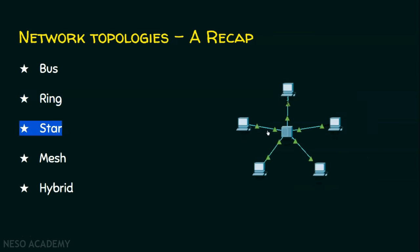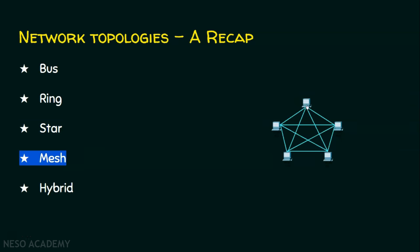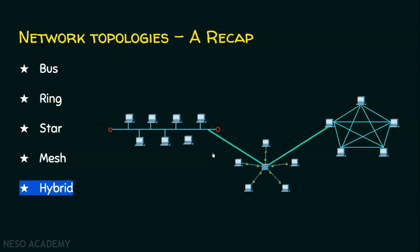Coming to the star topology, we will have a central node — maybe a switch or a hub — and each device will be connected to the central node. Coming to the mesh topology, every pair of nodes will have a dedicated line; every node will be connected with its other nodes through a dedicated link. And coming to the hybrid topology, a hybrid topology is a combination of one or more topologies — for example, a bus topology connected to a star topology which is in turn connected to a mesh topology.